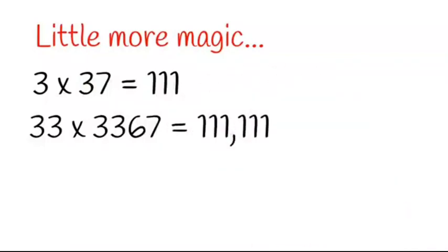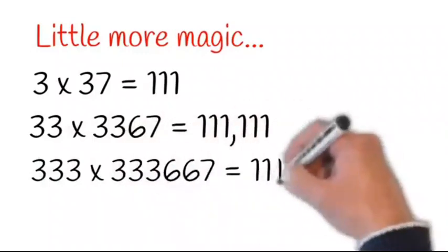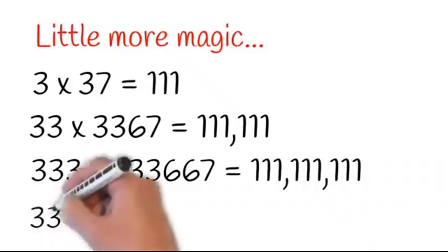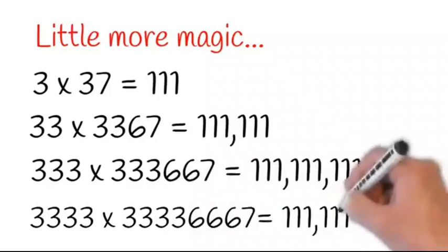Now 33 into 3367 is equal to 1111. And the same way, you keep on adding 3 on the left side and 3 and 6 on the right side, and the pattern keeps on repeating.